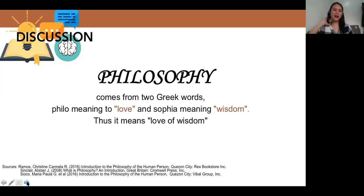The term was coined by Pythagoras, known for his Pythagorean theorem. It comes from two Greek words: philo meaning love, Sophia, wisdom. That does it means love of wisdom. And lovers of wisdom, we call them philosophers.